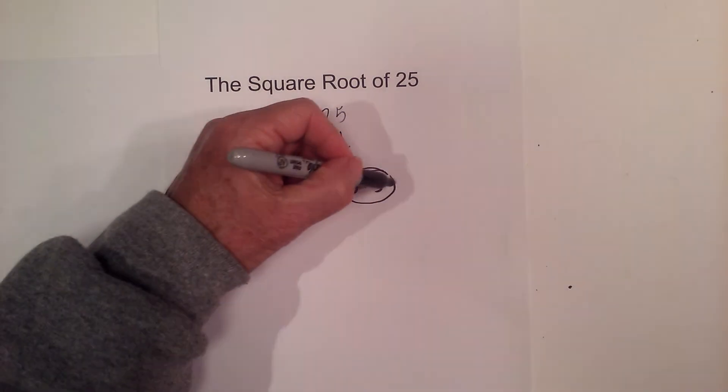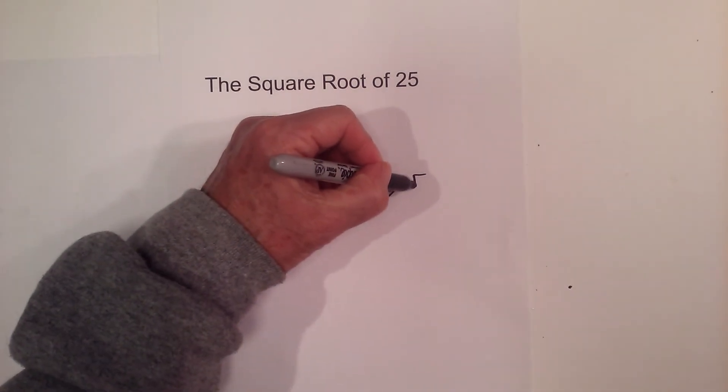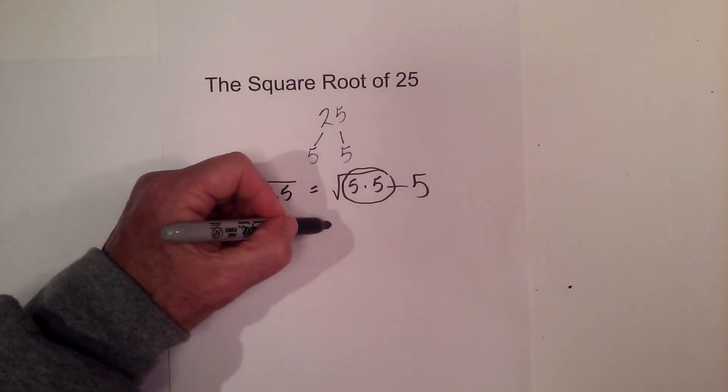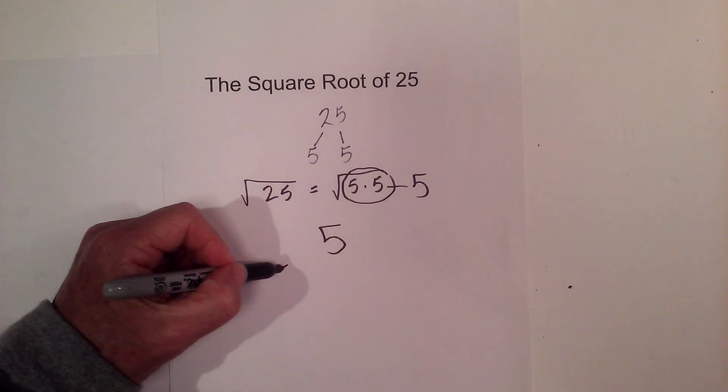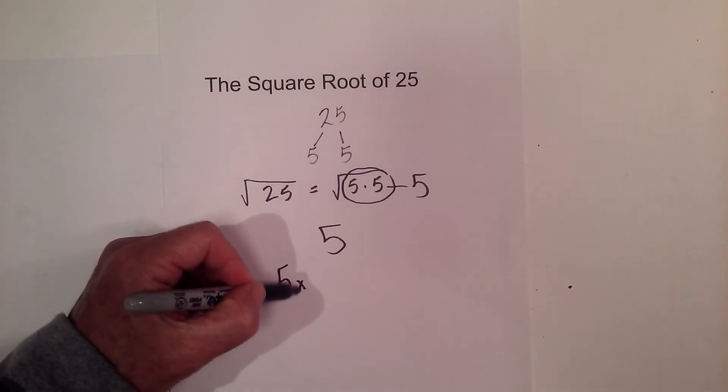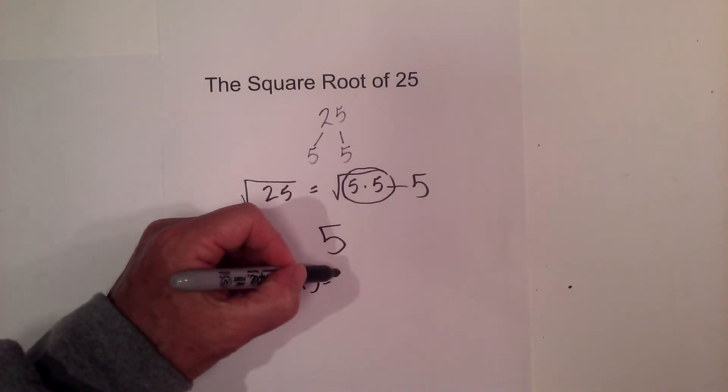But when you pull them out you only pull out one. So I have a 5. So the square root of 25 is 5. And the reason why is 5 times 5 equals 25.